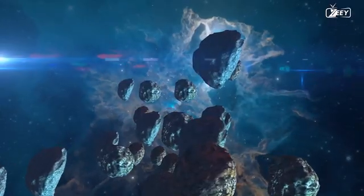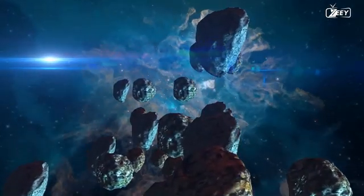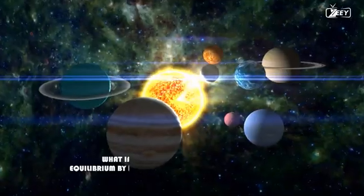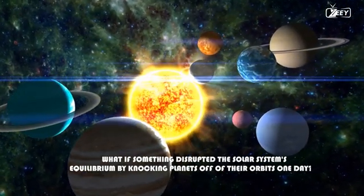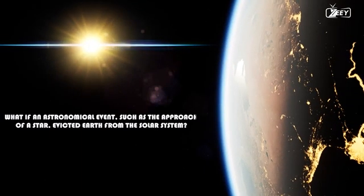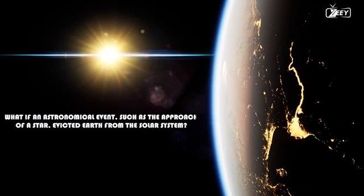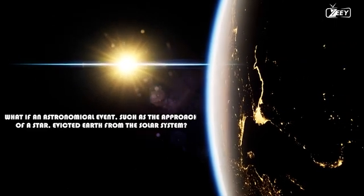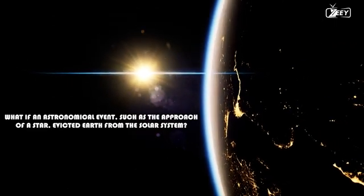However, there are numerous objects in the world that threaten this order. What if something disrupted the solar system's equilibrium by knocking planets off of their orbits one day? What if an astronomical event, such as the approach of a star, evicted Earth from the solar system? Let us investigate.